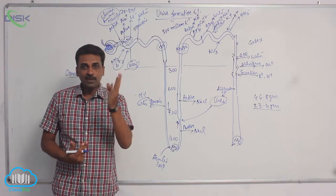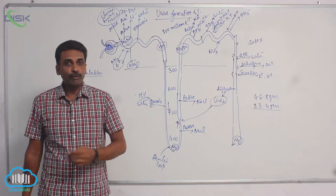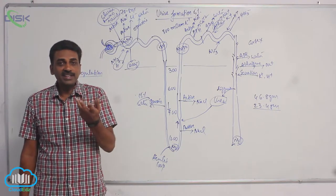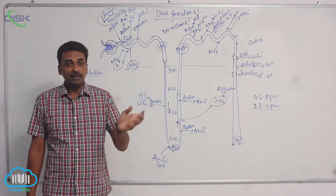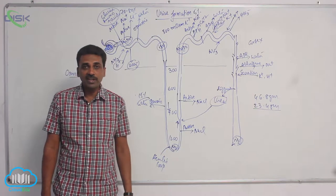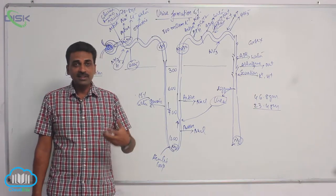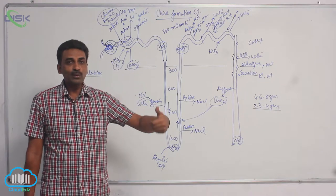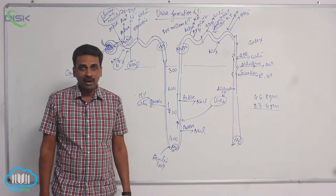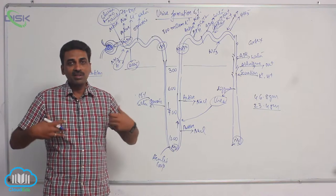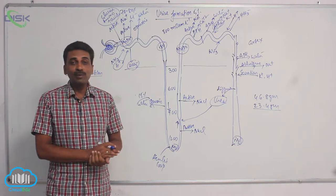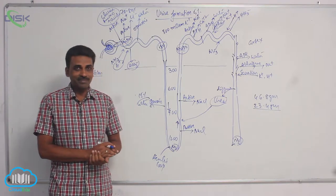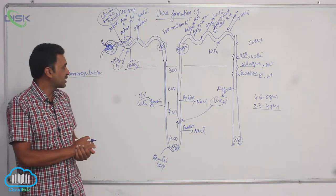pH of blood is precisely maintained at 7.4. If acidity increases, the H plus ions are increasing. The concentration of H plus ions increases, the pH will dip below 7. And at lower pH, the oxygen carrying capacity of hemoglobin is reduced. So it hampers the physiological activities.